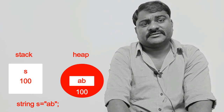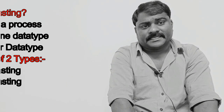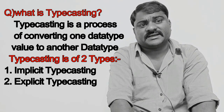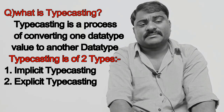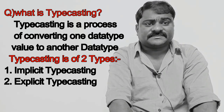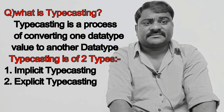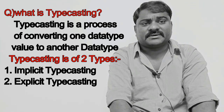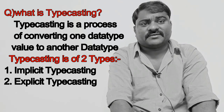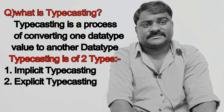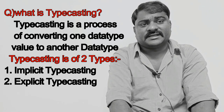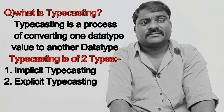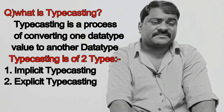In an interview they will ask: what is typecasting? Typecasting is a process of converting one data type value to another data type. Typecasting is of two types: implicit typecasting and explicit typecasting. Implicit typecasting means it is not required for the programmer to write separate code while converting from one data type value to another data type. Explicit typecasting means the programmer has to write the code manually while converting from one data type value to another data type.